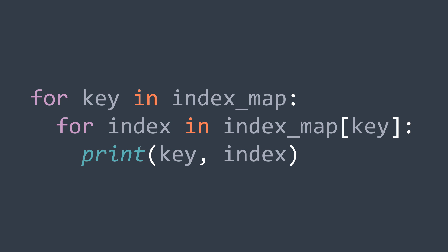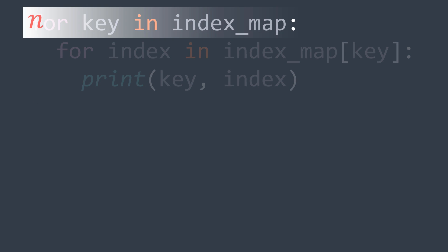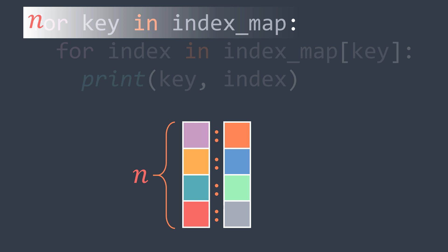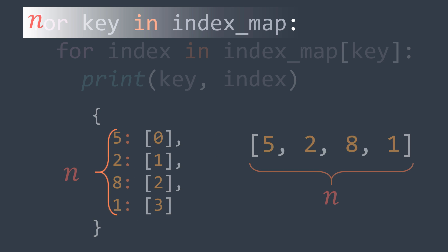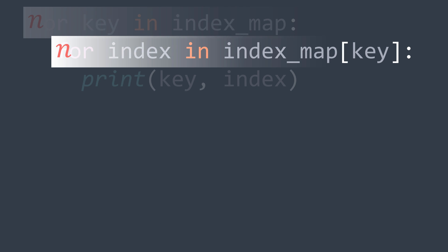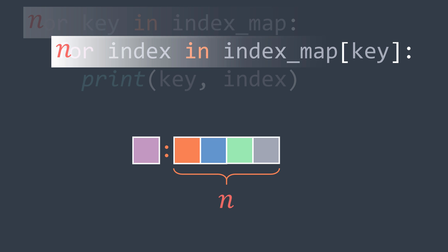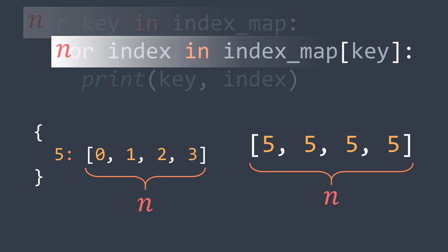Here you can see that we have nested loops. For the outer loop, in the worst case it gets repeated n times when the hash map has n keys, where n is the length of the array — this occurs when every value appears exactly once in the array. For the inner loop, in the worst case it gets repeated n times, which occurs when all elements of the array have the same value, because we can find that value at every index.